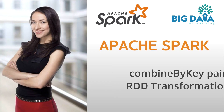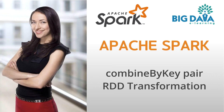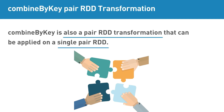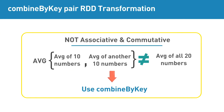Combined by Key is a pair RDD transformation that can be applied on a single pair RDD. The reason we are looking at combineByKey transformation as a separate video is that it needs more attention to understand. CombineByKey is needed in cases where we should do operations that are not associative and commutative.